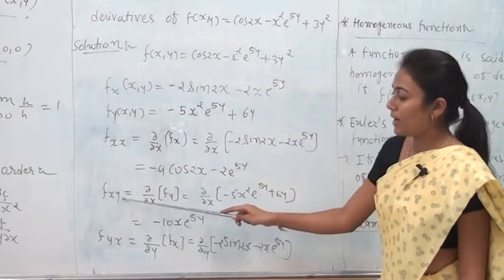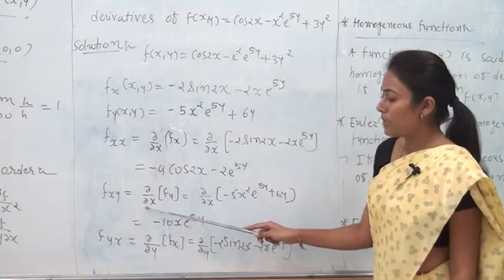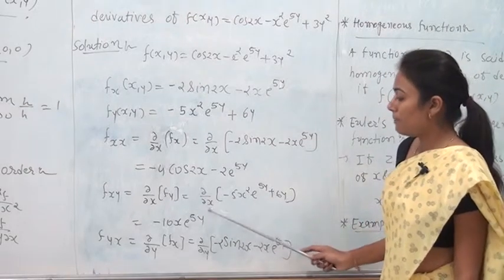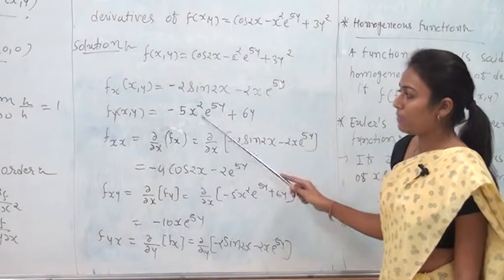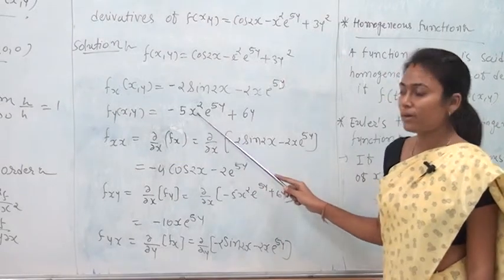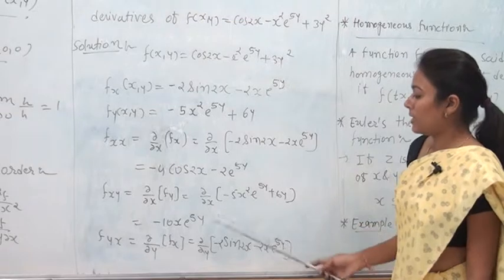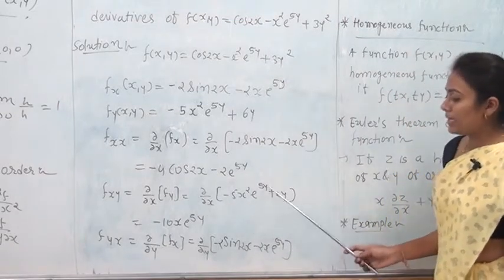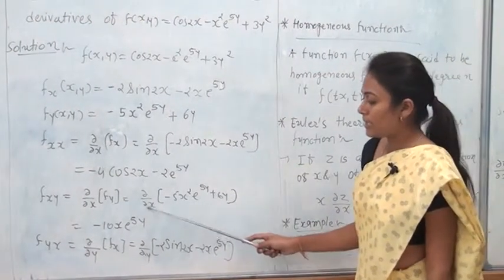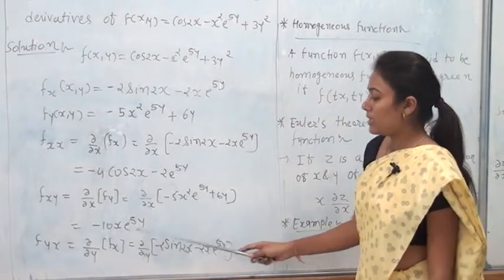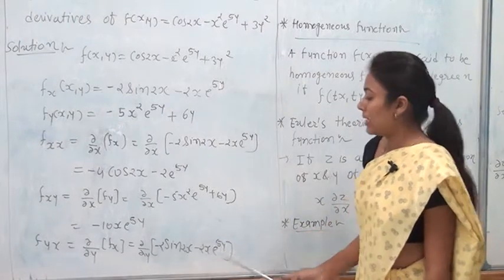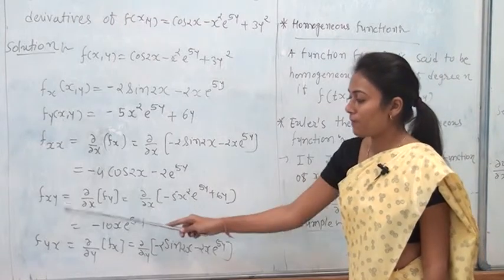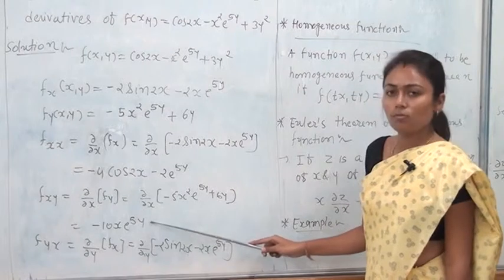For f_xy: differentiate f_y = −5x²e^(5y) + 6y with respect to x. Differentiating −5x²e^(5y) with respect to x gives −10x·e^(5y); 6y is a function of y only so it becomes 0. Therefore f_xy = −10x·e^(5y).